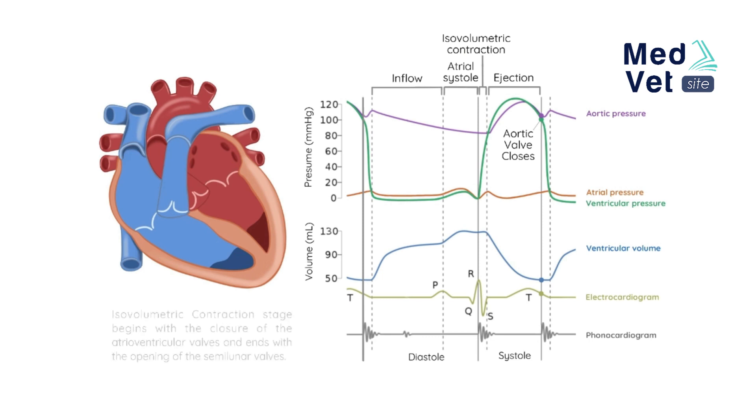To remember, the isovolumetric contraction stage begins with the closure of the atrioventricular valves and ends with the opening of the semilunar valves, and the ejection stage begins with the opening of the semilunar valves and ends with their closing.